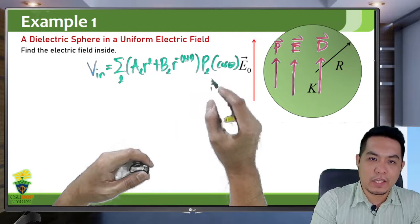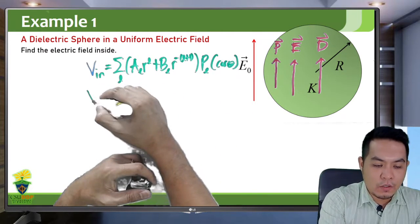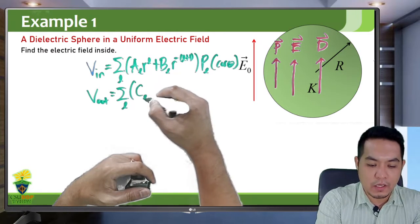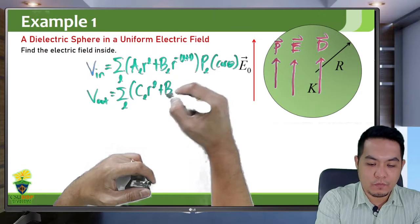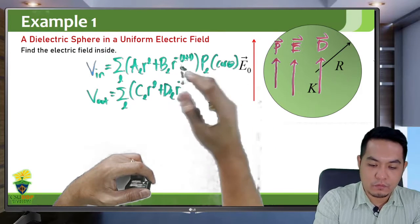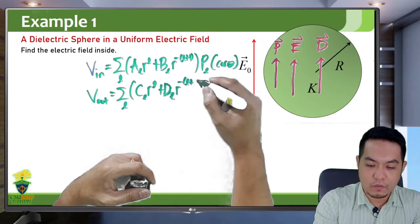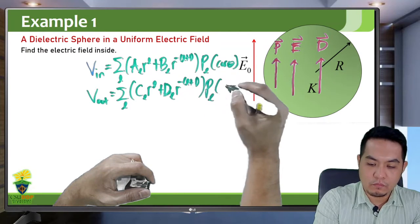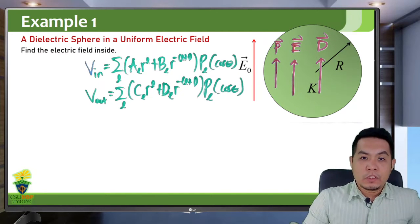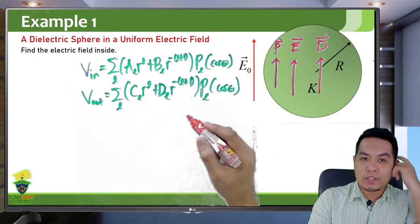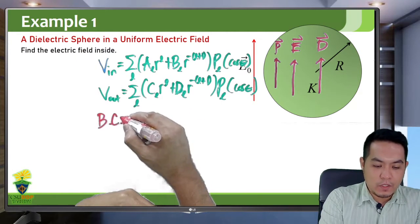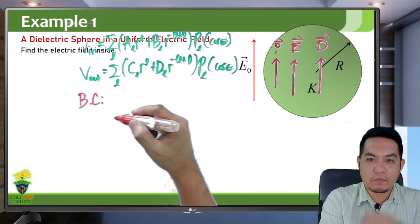These are our general solutions for the potential inside and outside — they have the same form. What are our boundary conditions? We start with the generic boundary conditions. As R approaches 0, the potential inside must be finite — it must not equal infinity. As R approaches infinity, our potential outside approaches negative E₀ dot dL.